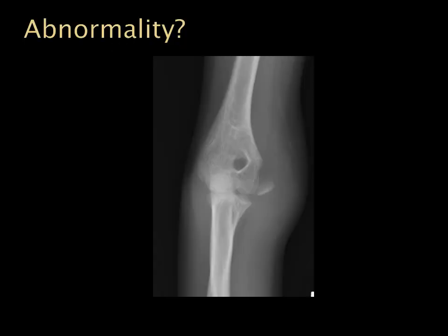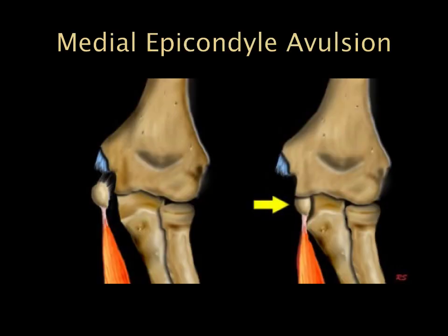On the other side of the elbow, this is a medial epicondyle avulsion fracture. The diagram shows the common tendons that insert onto the medial epicondyle — when there is too much force, they can cause an avulsion fracture pulling off that medial epicondyle ossification center.